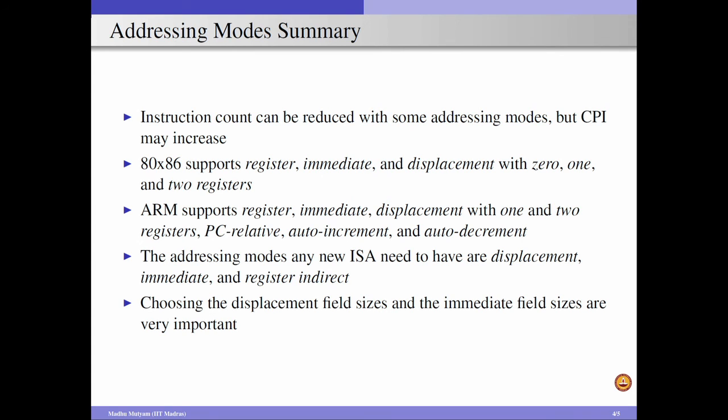When designing a new ISA, we need to ensure that at least three addressing modes are supported: displacement, immediate, and register indirect. When dealing with displacement addressing, we must be careful about the displacement field width — if the displacement field is too wide, we cannot support many operations because the number of bits in an instruction is limited. Similarly, for immediate addressing, the bit field for the immediate value should be a reasonable size to avoid impact on overall instruction length. In summary, choose the best addressing modes for your ISA based on target applications, and choose reasonable bit field sizes for displacement and immediate addressing modes.